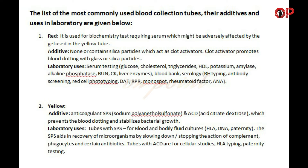Number two: Yellow tube. Additive: anticoagulant — SPS (sodium polyanethol sulfonate) and ACD (acid citrate dextrose), which prevent blood clotting and stabilize bacterial growth. Laboratory uses: tubes with SPS are for blood and bodily fluid cultures, HLA, DNA, and paternity testing. SPS aids in recovery of microorganisms by slowing down or stopping the action of complement, phagocytes, and certain antibiotics. Tubes with ACD are for cellular studies, HLA typing, and paternity testing.